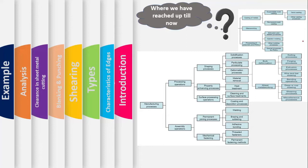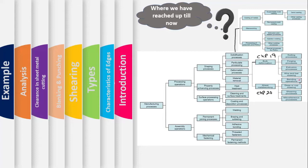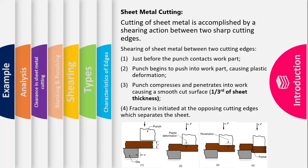Referring to the manufacturing process chart helps organize and connect different processes. In chapter 19 we discussed bulk deformation — rolling, forging, extrusion, and wire/bar drawing. Now we move toward sheet metal working, where in this chapter we discuss bending, deep drawing, shearing, and miscellaneous processes.